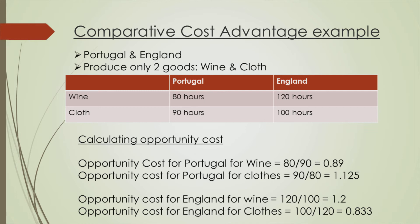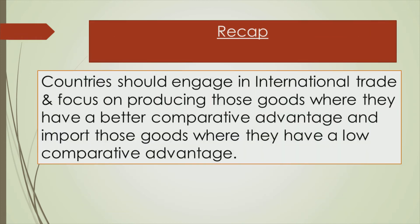Therefore, Portugal should produce wine and exchange surplus wine with England to get cloth. Similarly, England should use its resources to produce cloth and exchange excess cloth with Portugal to get wine. Thus, both countries can mutually benefit by engaging in international trade. To recap, the theory of comparative advantage says that countries should engage in international trade and focus on producing that good which they can produce at a lower opportunity cost than the other country.